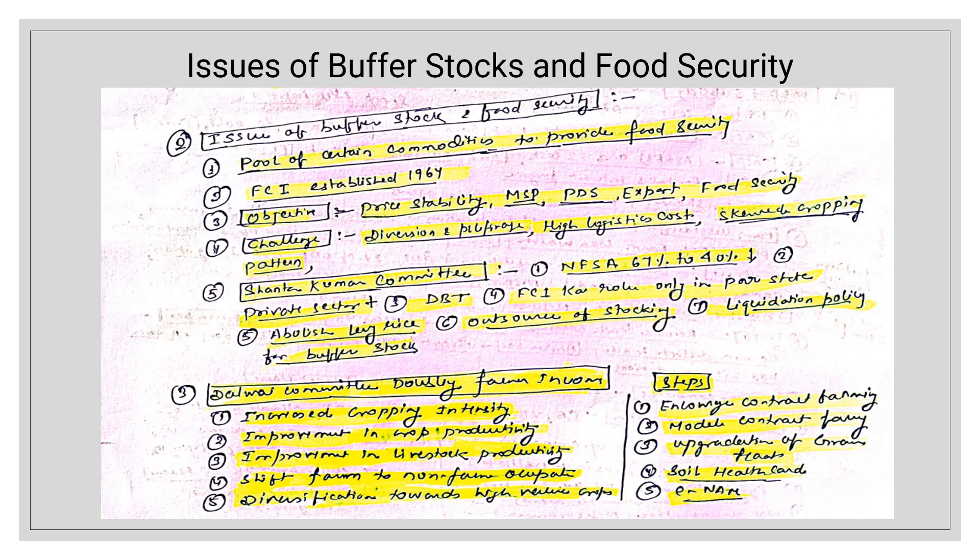Now coming to the issues of buffer stocks and food security. Buffer stock is basically a pool of certain commodities to provide food security — it ensures availability at affordable prices. FCI was established in 1964 and works across India to procure food grains from farmers and store them. The objectives of buffer stock are: maintaining price stability, providing MSP to farmers during procurement, making food grains available at fair price through PDS, and ensuring export capability and food security.